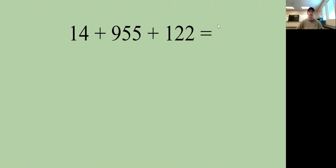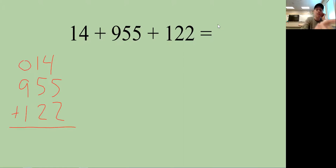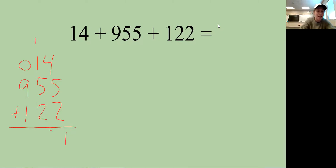Next: 14 plus 955 plus 122. Line up your place value — the 955 goes in the middle, 14 is on top, and 122 is below. You can put a zero in the hundreds place for 14 if you want. Four plus five plus two is 11, carry the one; one plus five plus two is eight... the answer is 1,091.